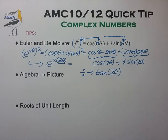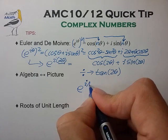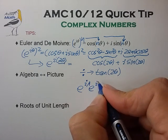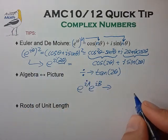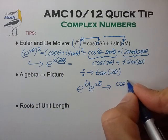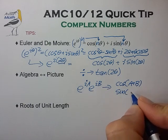So as an exercise, see if you can start with the expression e to the i a, e to the i b, this product, and see if you can use the same logic to derive the sum angle formulas for both sine and cosine.